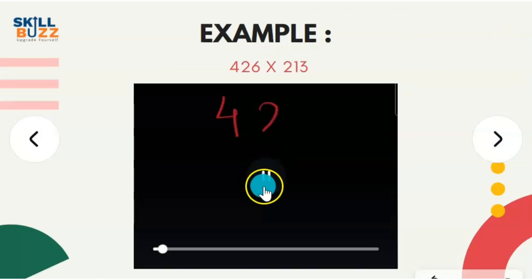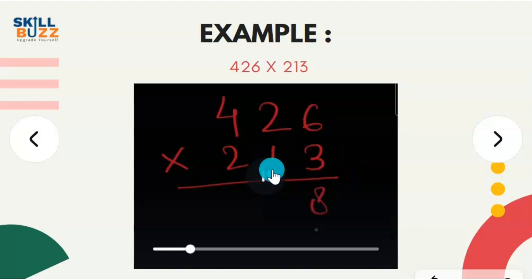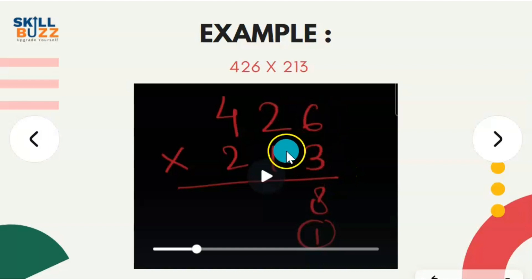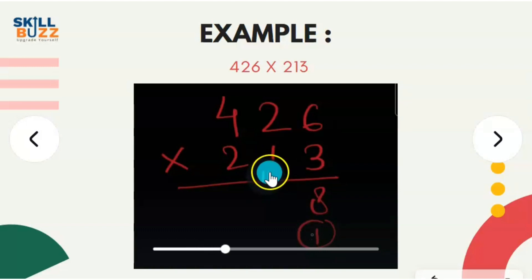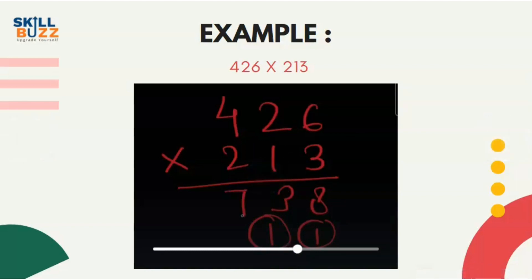First step: 6 into 3 is 18. Write 8, carry 1. Second step: carry 1 forward. Third step will be three-digits: 4 threes are 12, plus 6 twos are 12, plus 2 is 26, plus 1 is 27. So we write 7 and 2 goes into carry.